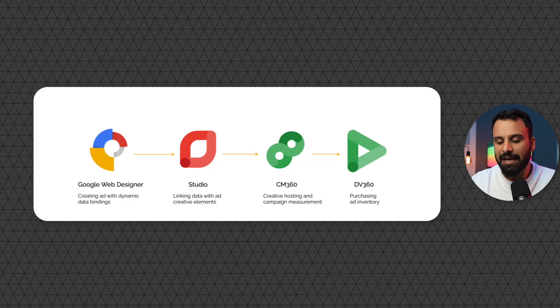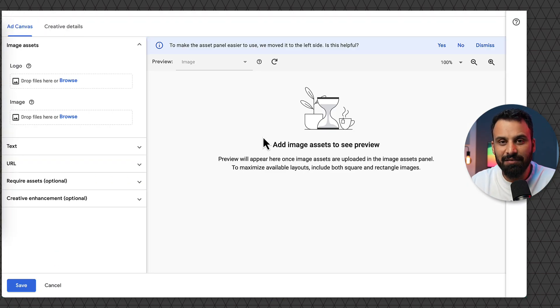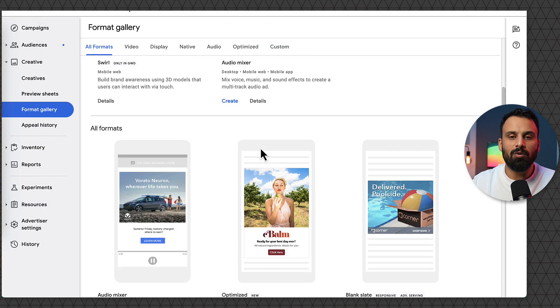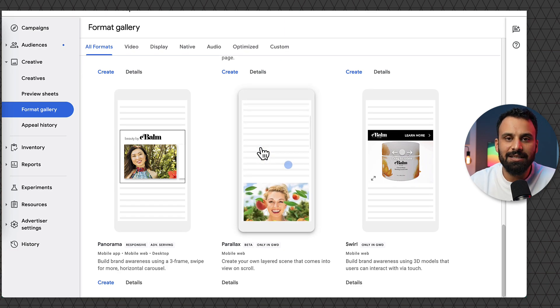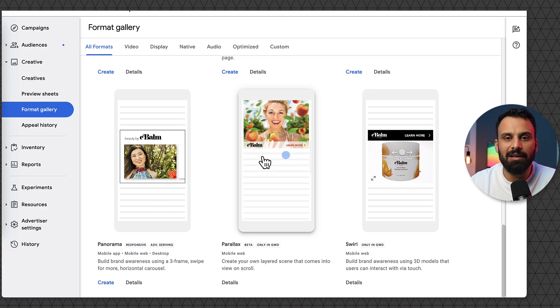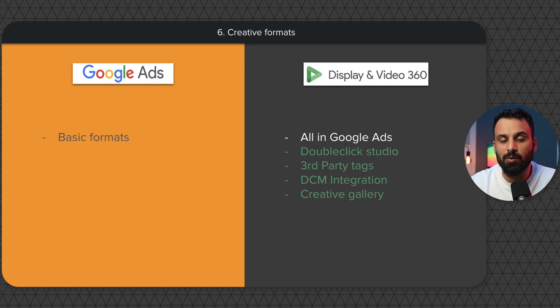DV360 also has a native integration with DCM (ad server), making it easy to manage creatives. There's also a creative gallery in DV360 with rich media formats like roll-ons — you simply upload your assets and it automatically creates these rich media formats. A lot of companies that are heavy on creative testing use this as a key reason to use DV360 for display and video, while still using Google Ads for shopping and search.